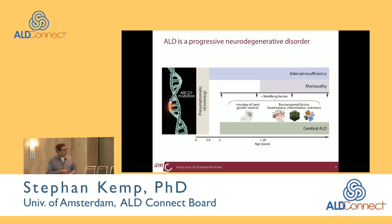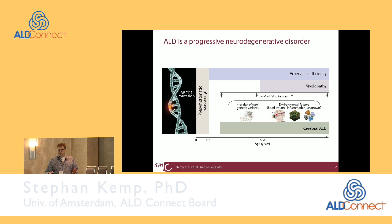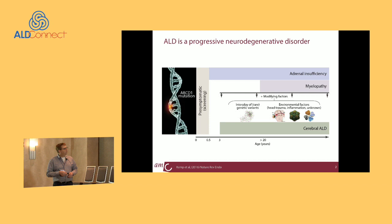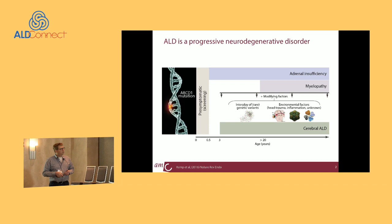All male patients are born with an ABCD1 mutation and there is some time before they develop phenotypes. These colored bars indicate the age at which patients are at risk to develop any of these three phenotypes. The earliest boy ever reported with adrenal insufficiency was six months of age, but there are also males that develop it in their 40s or 50s. Myelopathy starts in adults after age 20. Together, adrenal insufficiency and myelopathy can be seen as the default mode of the disease.